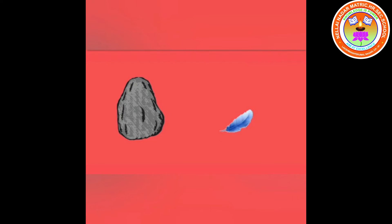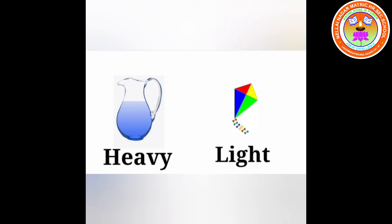Stone, feather. Which object is heavy? Stone is heavy and the feather is light. Jug, kite. Which object is heavy? Jug is heavy. Kite is light.